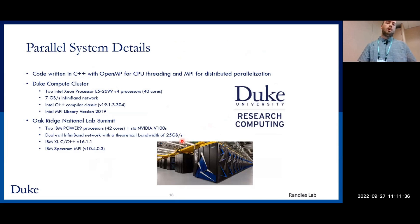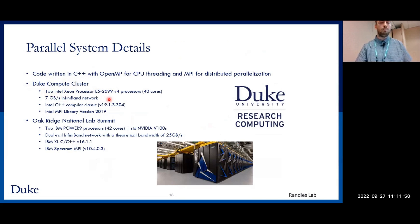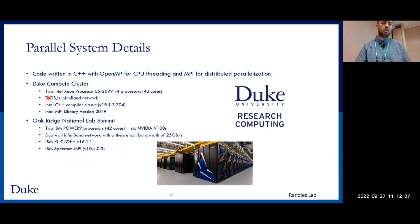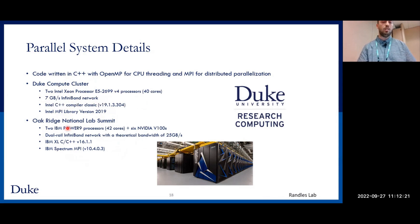Our code is written in C++ with OpenMP for CPU threading and MPI for distributed parallelization. We performed simulations on two systems: the Duke Compute Cluster, a small-scale cluster on campus, and the Oak Ridge National Lab Summit supercomputer. The Duke Compute Cluster uses two Intel Xeon processors totaling 40 cores per node, with an InfiniBand network of seven gigabytes per second. We used the Intel C++ compiler classic and Intel MPI library version 2019.